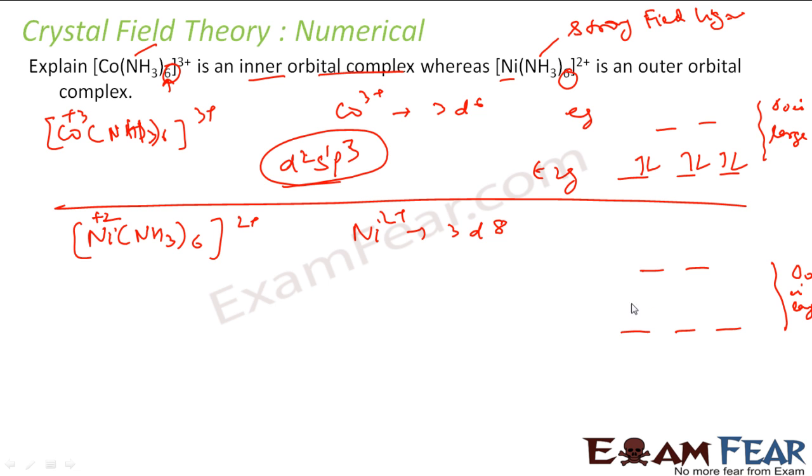Eight electrons need to be filled: 1, 2, 3, 4th will come here, 5th will come here, 6th will come here, 7th will come here, 8th will come here. Why will the 8th not pair? Because the 8th has a better option of coming here. This is how the electrons will be filled.